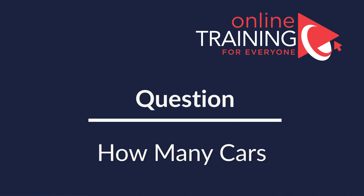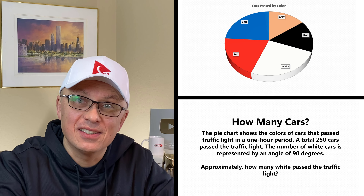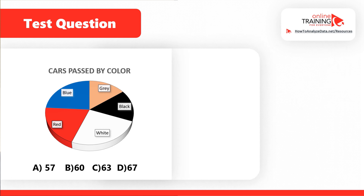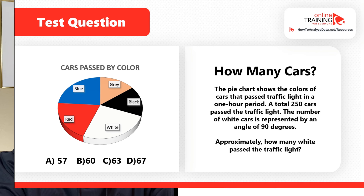A lot of times you get tested on your ability to analyze charts and graphs. In this question, we see a pie chart broken down into parts presented in different colors: white, red, blue, gray, and black. The question asks: the pie chart shows the colors of cars past a traffic light in a one-hour period. A total of 250 cars passed the traffic light, and the number of white cars is represented by an angle of 90 degrees.